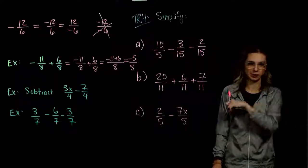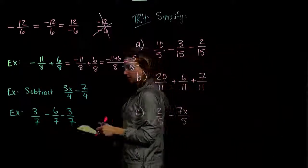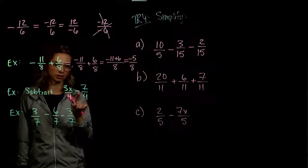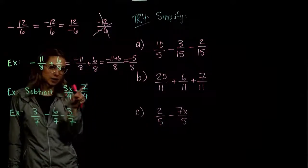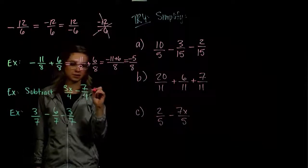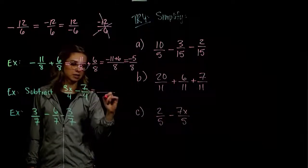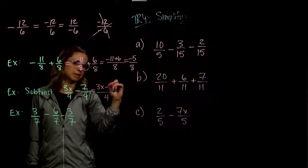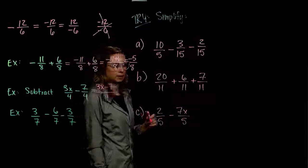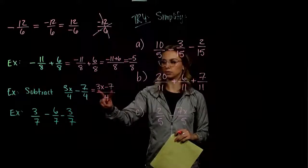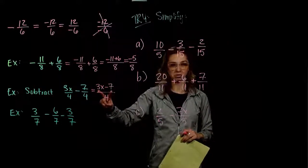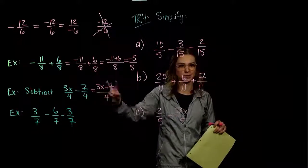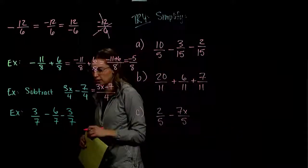Same story for the next one. We have common denominators and subtraction in the middle, so that subtraction sign goes with the 7. Subtracting across the top and keeping the same denominator, we get 3x minus 7. These two are not like terms, so we're not allowed to combine them. We're done there.